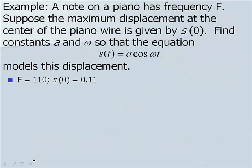Let's look at another example. A note on a piano has frequency f. Suppose the maximum displacement at the center of the piano wire is given by S of 0. Find constants A and omega so that the equation S of t equaling A cosine of omega t will model this displacement. We know that our frequency f is 110 and S of 0 is equal to 0.11.